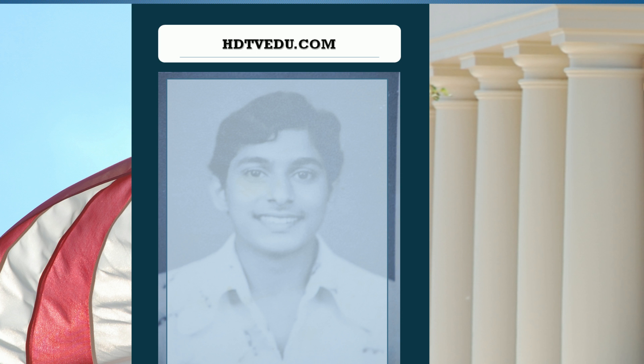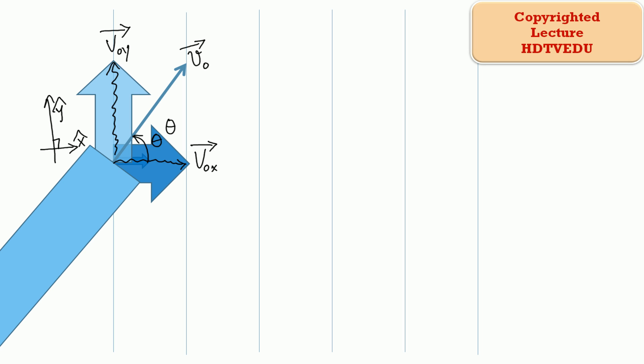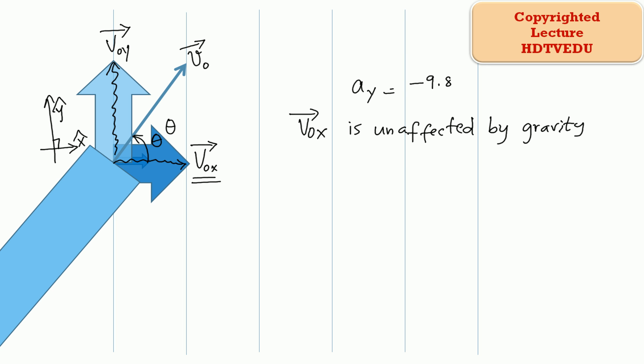Here is our gun firing. If you have a velocity vector that is at an angle to the horizontal, then that velocity vector can be resolved into its horizontal component and vertical component. In the absence of air resistance, the horizontal component is unaffected by gravity, and that is roughly negative 9.8 meters per second per second.